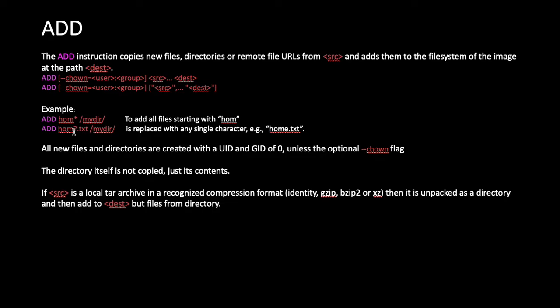For example, 'hom?.txt' means any file starting with 'hom' followed by any single character will be copied into the mydeer directory. All new files and directories are created with UID and GID of zero unless the --chown flag is used. When copying a directory, only its contents are copied — not the directory itself.